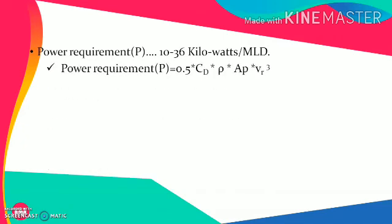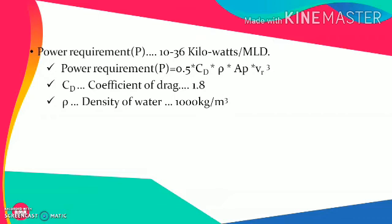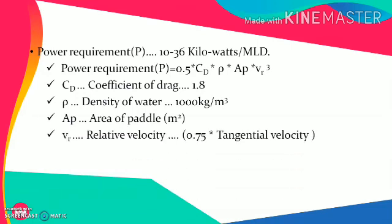Power requirement is generally in the range of 10 to 36 kilowatts per million liters of water treated per day. Power is calculated as: P = 0.5 × Cd × ρ × Ap × Vr³, where Cd is the coefficient of drag (about 1.8 for flat blades), ρ is the density of water (approximately 1000 kg/m³), Ap is the area of paddles in m², and Vr is the relative velocity = 0.75 × tangential velocity. The factor G·Td should be in the range of 10⁴ to 10⁵.